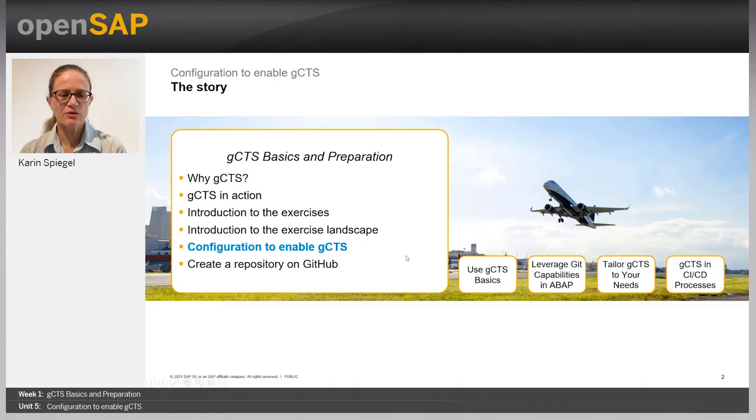Hello and welcome to the OpenSAP course DevOps for ABAP with GCTS in SAP S/4HANA. Week 1, Unit 5: Configuration to enable GCTS. My name is Karin Spiegel and I'm a product manager. In this unit, we are going to configure GCTS — you will do the enablement of GCTS to make it run for all your developers.